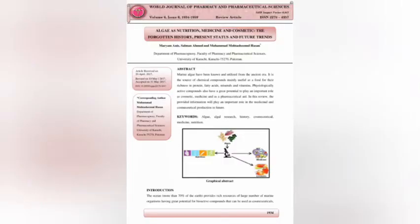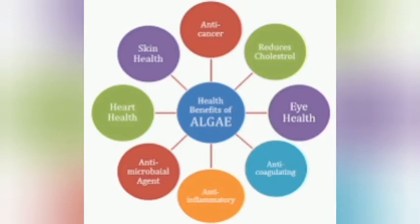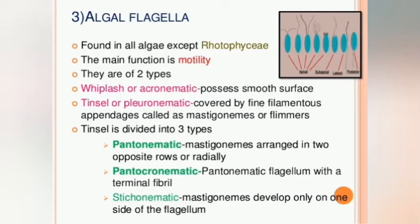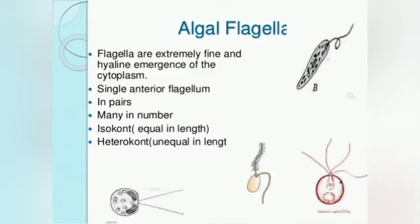Let us discuss prokaryotic Algae. What is prokaryotic Algae? Simply, they are the simplest of the Algae — not true Algae. There is no nucleus and no chloroplast. Their cell wall composition is similar to bacteria. The photosynthetic apparatus is made of thylakoid laminae. Prokaryotic Algae are widely distributed over land and water, like cyanobacteria.